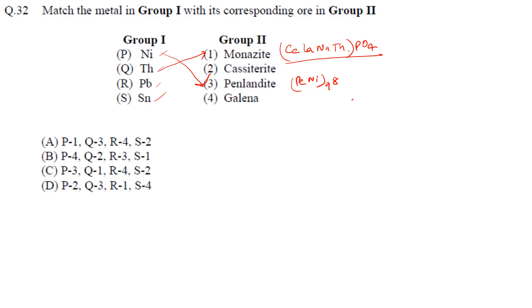Lead matches with galena (PbS), the sulfide ore of lead. Tin matches with cassiterite, the oxide ore of tin (SnO2). So the final matching is: P-3, Q-1, R-4, S-2.